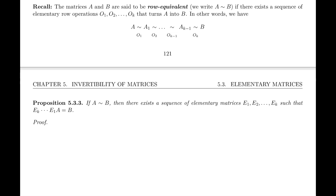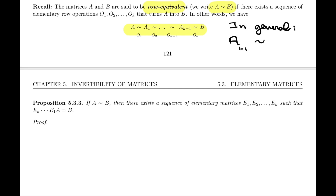A reminder of a definition we gave a while ago: two matrices A and B are said to be row equivalent — the notation is this little equivalence sign — if there exists a sequence of elementary row operations O1, O2, all the way to Ok that turns A into B. In the notation, starting from A, if I apply O1 I get A1, apply O2 I get A2, and so forth until we get to B. In general, Ai-1 with operation Oi gives Ai.